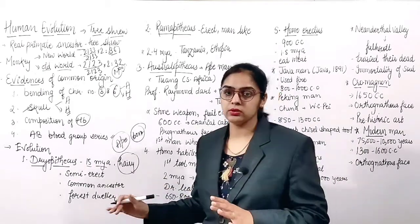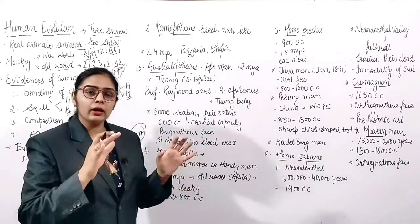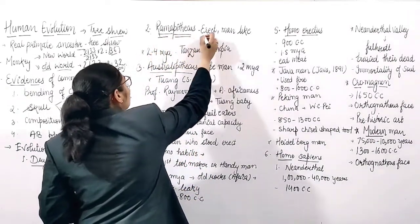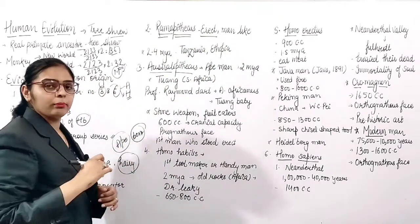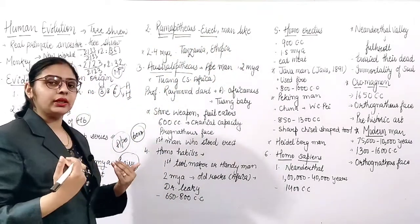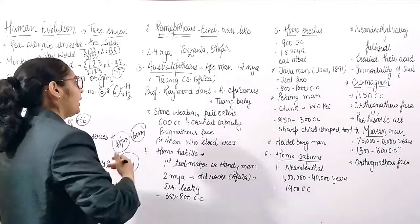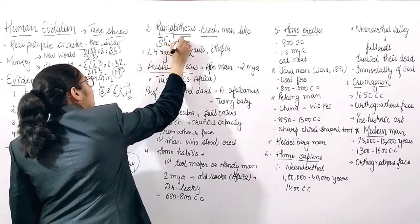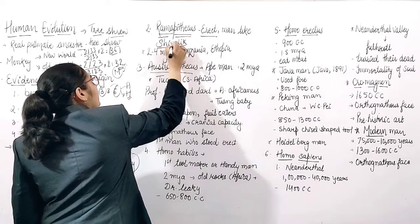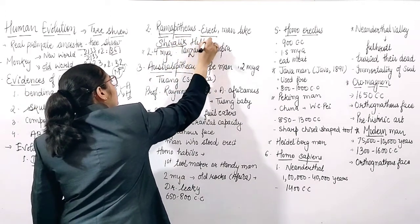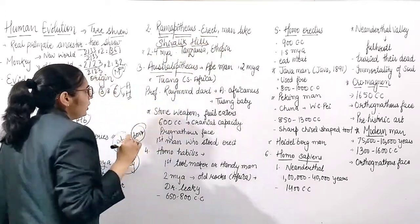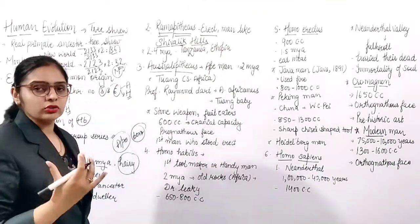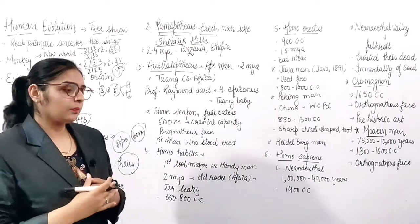Second in the mnemonic is 'Ram' - that is Ramapithecus. Ramapithecus was more human-like, more man-like, with a straight body. Its fossils were found in the Shivalik Hills. There is also another related species called Sivapithecus, whose fossils were also found in the Shivalik Hills.